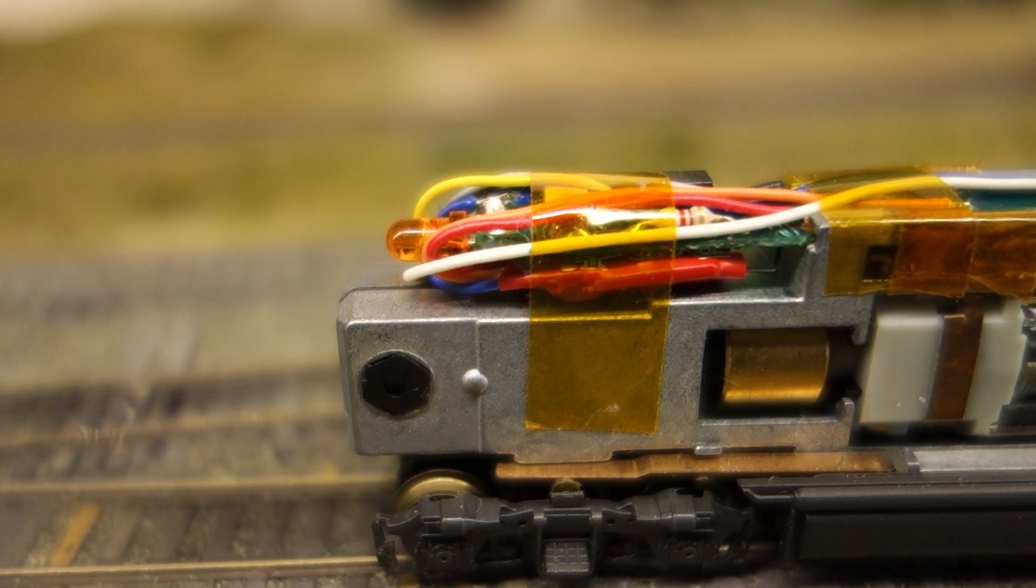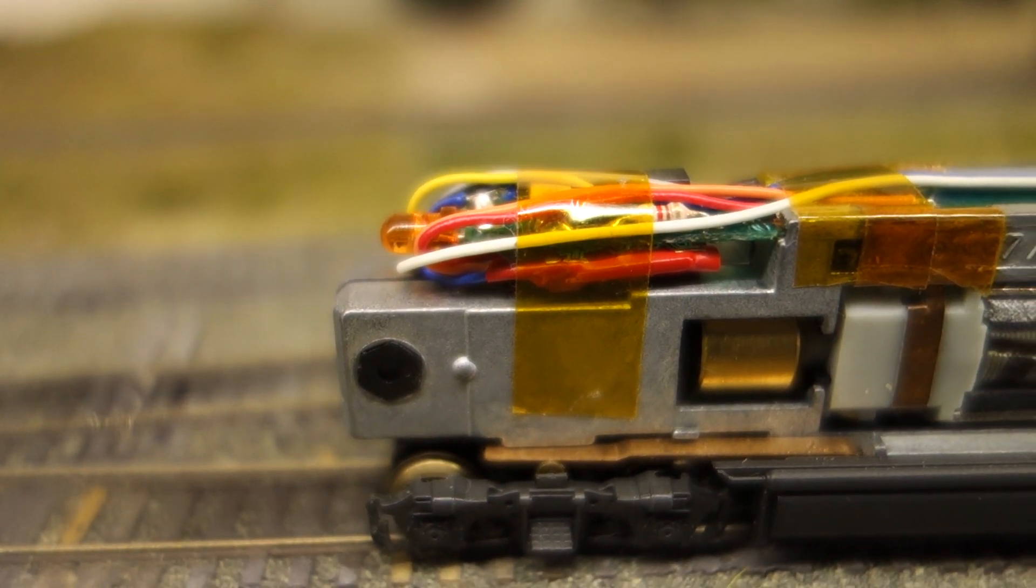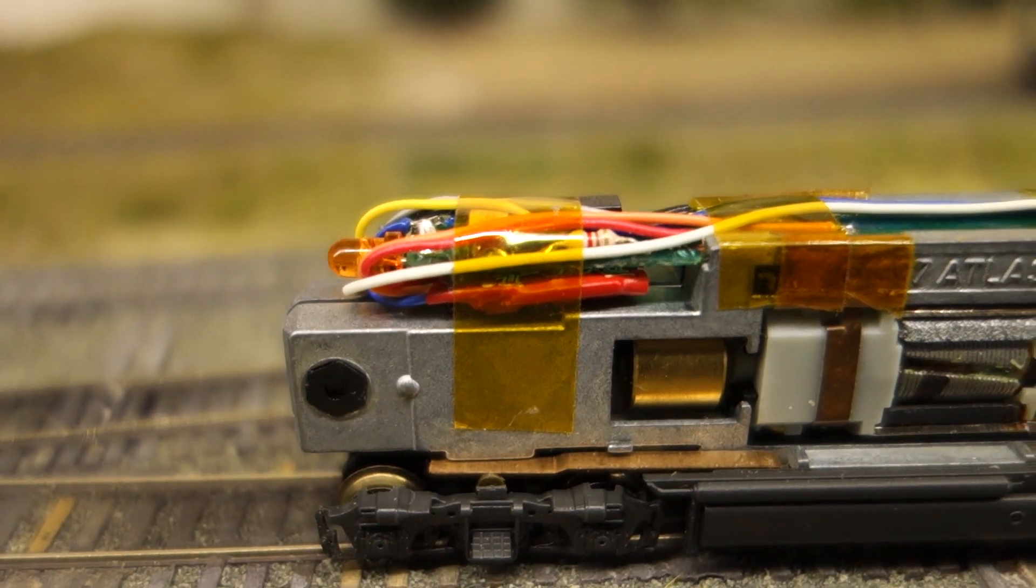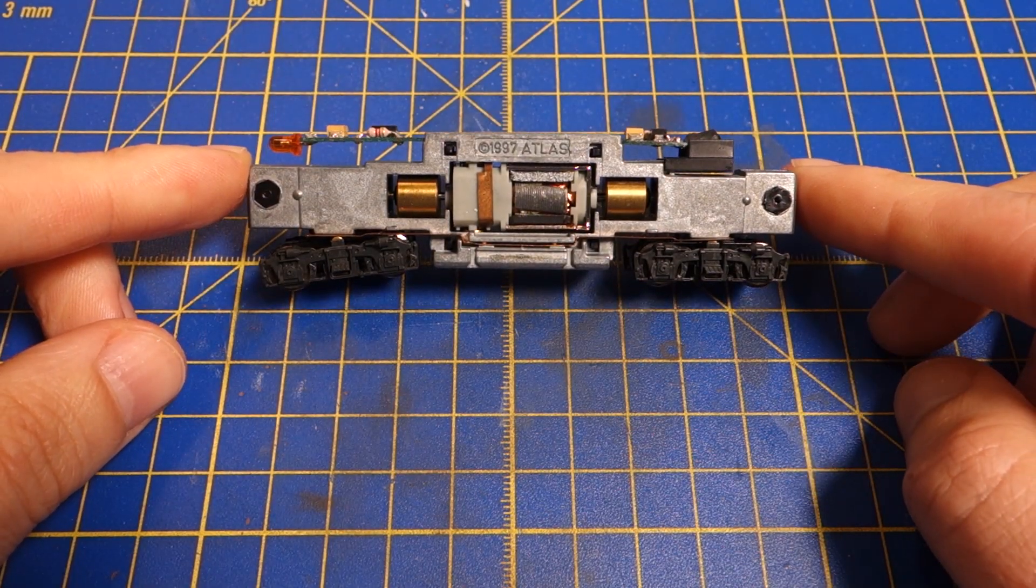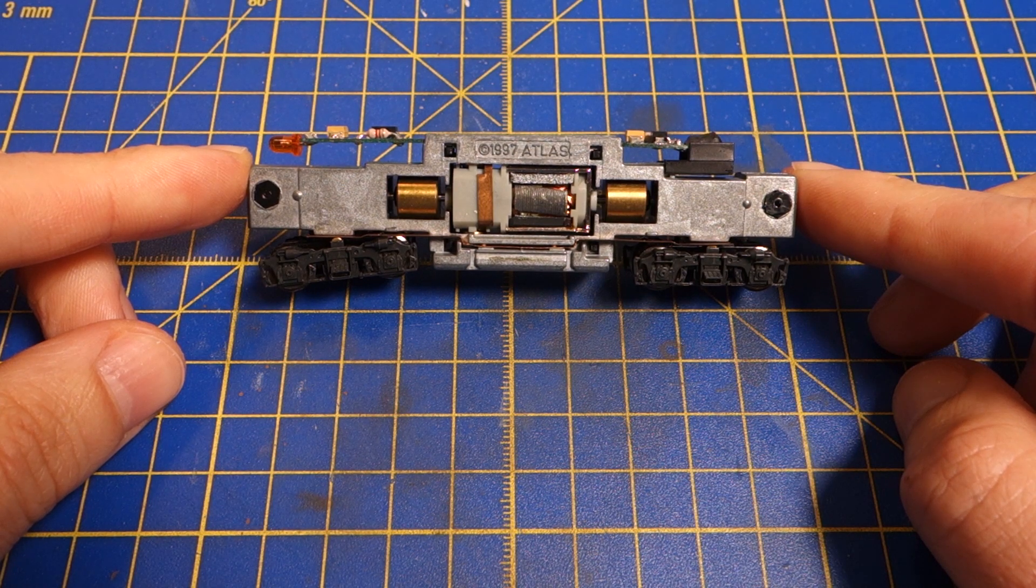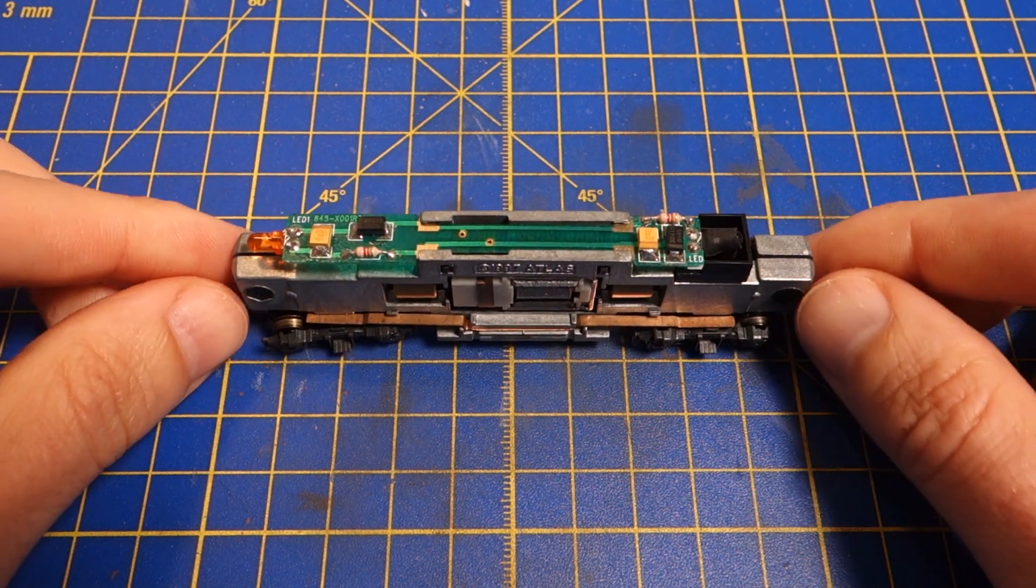This video is about soldering a Digitrex DC126 decoder to the analog lightboard of an Atlas GP40. The instructions should work for pretty much any decoder with the standard color scheme for the wires and any modern split frame DCC ready mechanism.